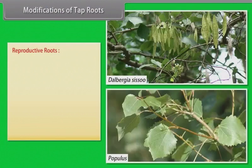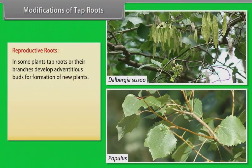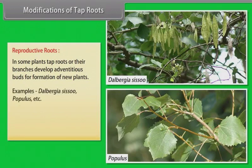Reproductive roots — in some plants, tap roots or their branches develop adventitious buds for the formation of new plants. Examples: Dalbergia sissoo, Populus, etc.